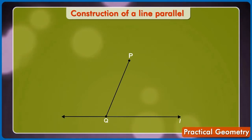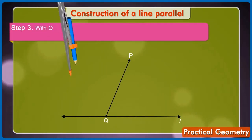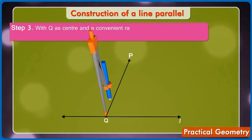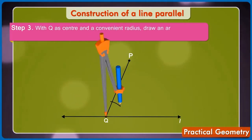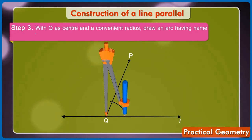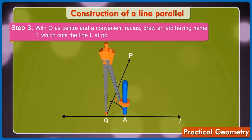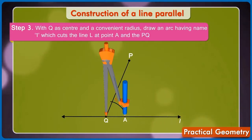Now, in step 3, with Q as center and a convenient radius, draw an arc having the name 1 which cuts the line L at point A and the PQ at B.